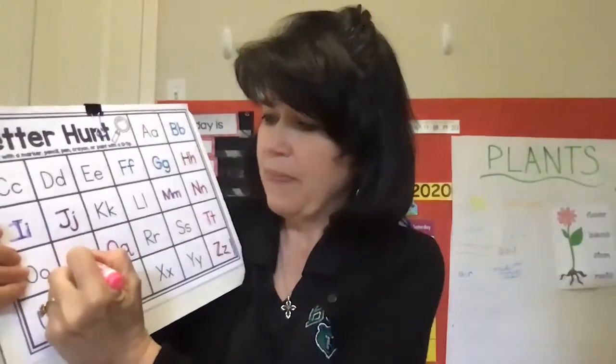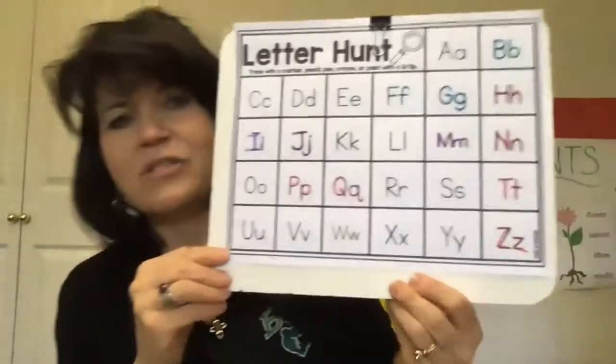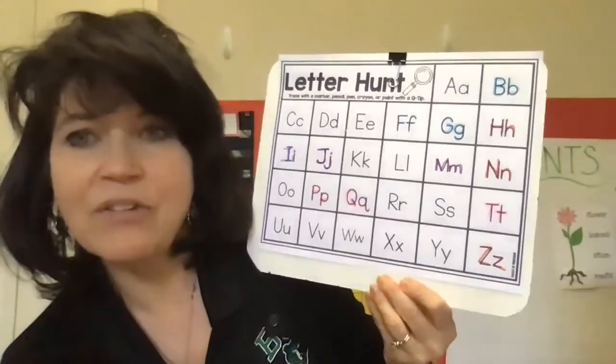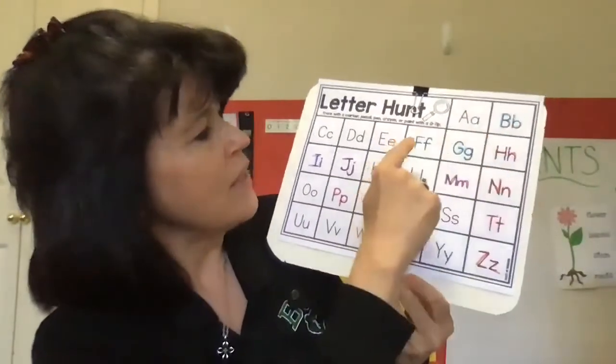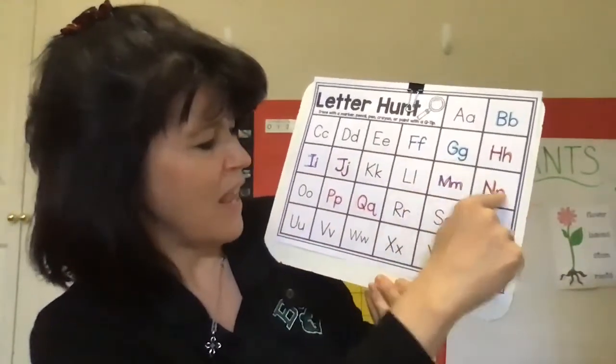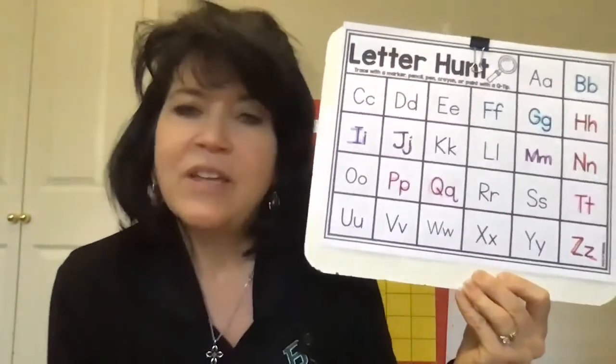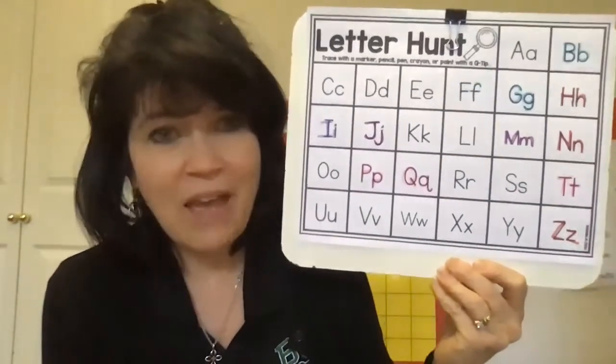What's this letter? This says P as in pumpkin. Find your P and mark it. Now look how many letters we've done together — let's count and see how many we did. 1, 2, 3, 4, 5, 6, 7, 8, 9, 10, 11, 12. We did a lot of them — almost half of them.